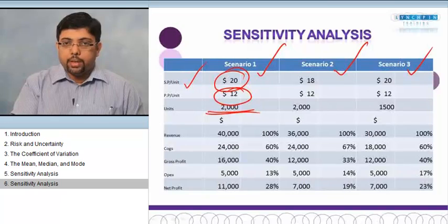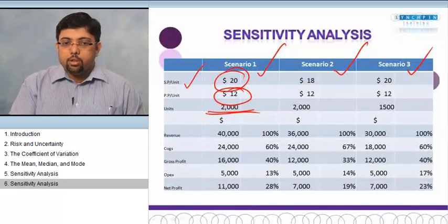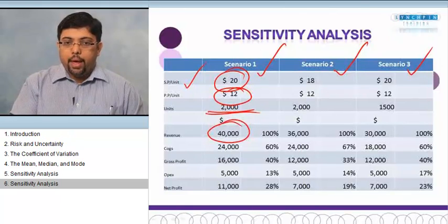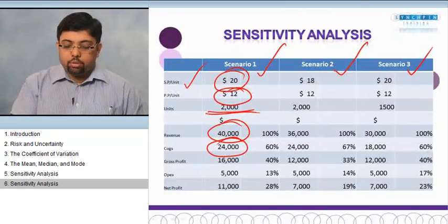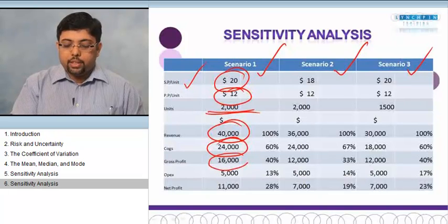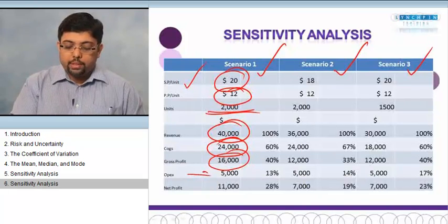Per unit selling price is $20, per unit purchase price is $12, and we're selling 2,000 units. If you multiply 2,000 by 20, you will be getting $40,000 as revenue. COGS will be $24,000—2,000 multiplied by 12—and the gross profit is $16,000. I have taken in the OPEX, which is constant operational expenses, and the total profitability is $11,000.